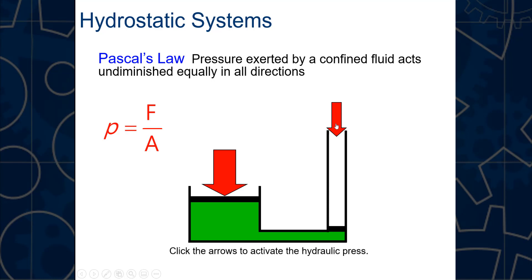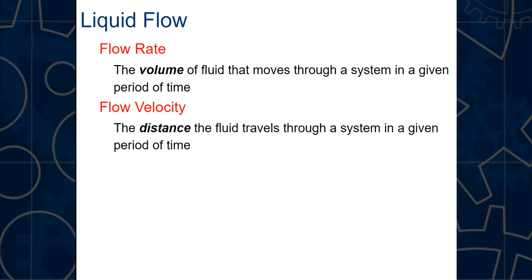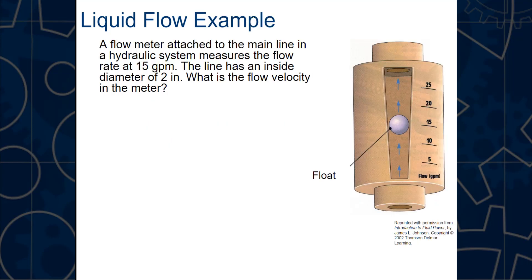Liquid flow breaks into two categories: flow rate and flow velocity. Flow rate is the volume of fluid that moves through the system in a given period of time. Flow velocity is the distance the fluid travels through a system in a given period of time. We use Q for flow rate, V for flow velocity, and A for area—note that V here does not stand for volume. The formula is: flow rate equals flow velocity times area (Q = V × A).